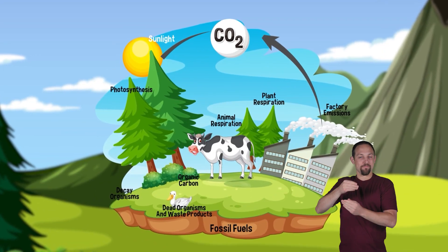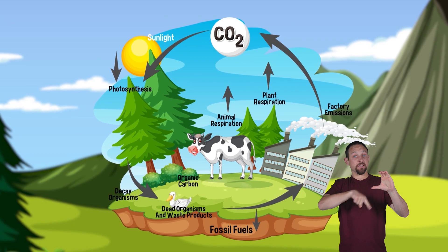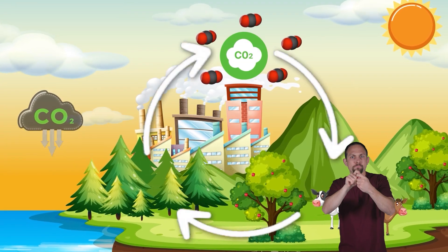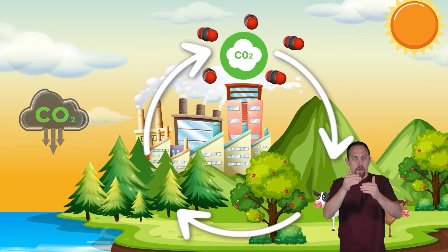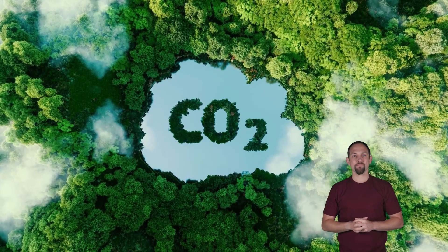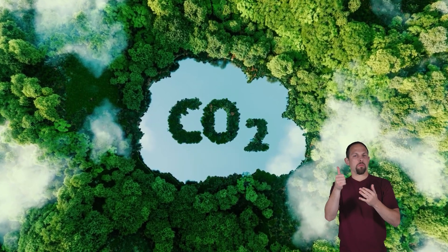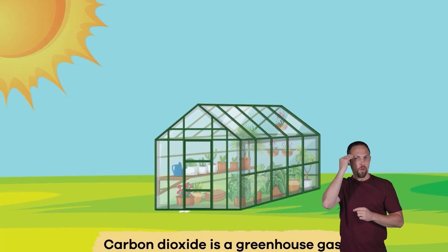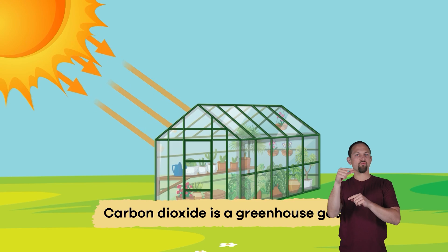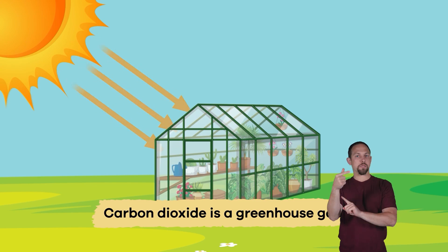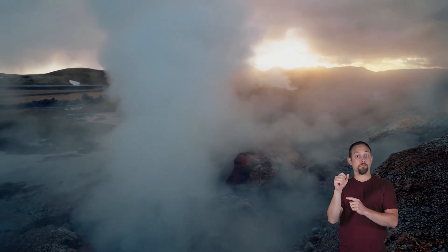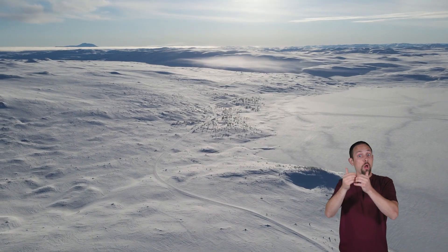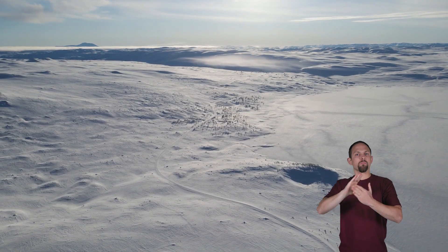Remember, this cycle is continuous and there is no specific order to the steps. Here are a few other important facts you should know. Carbon dioxide is a greenhouse gas — it traps heat in the atmosphere, and without it the earth would be too cold to be livable.